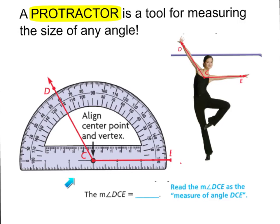Do you see this tool right here? This is called a protractor. A protractor is a tool for measuring the size of any angle. Do you see this dancer right here? She is making with her arms kind of like what we do in class when we want to show an obtuse angle. We're going to call this angle DCE and we want to find the measurement of her angle so we can use this protractor to find out.